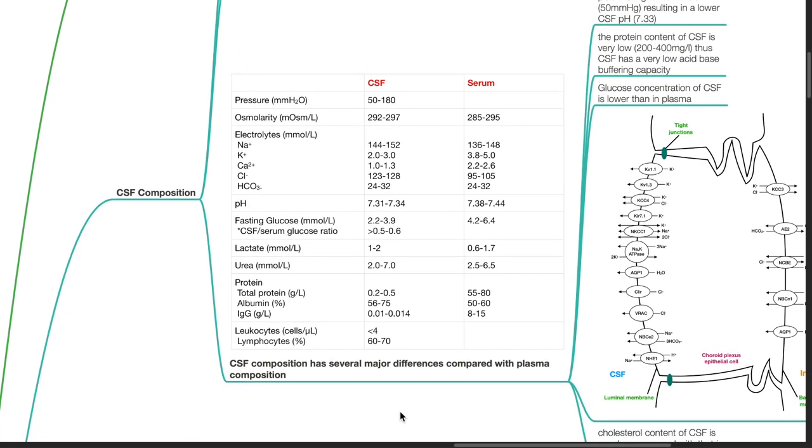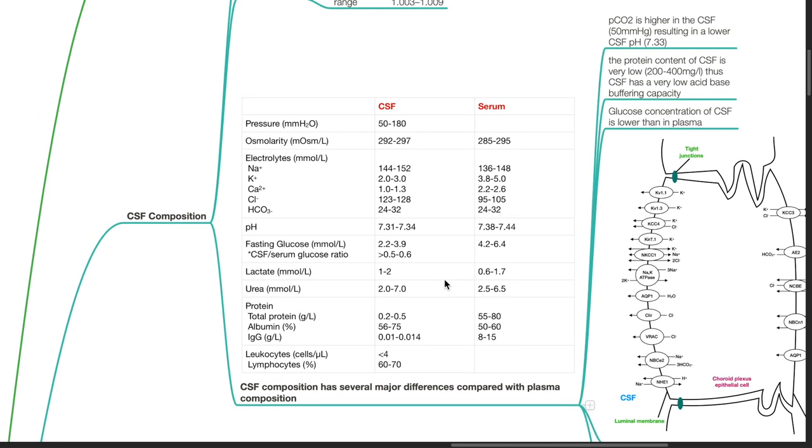CSF composition has several major differences compared with plasma composition. CSF pressure is 50 to 180 mmH2O. CSF osmolarity is 292 to 297 mOsm per liter, while serum osmolarity is 285 to 295 mOsm per liter.